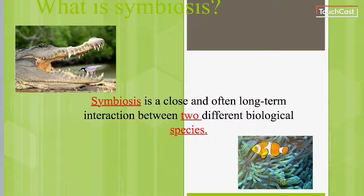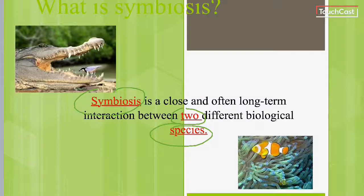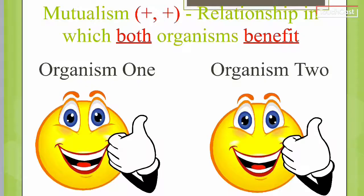Think about the movie Finding Nemo — Nemo and his dad lived in the sea anemone. That's a relationship. Keep that in the back of your mind so you can understand the relationship between two different living organisms.